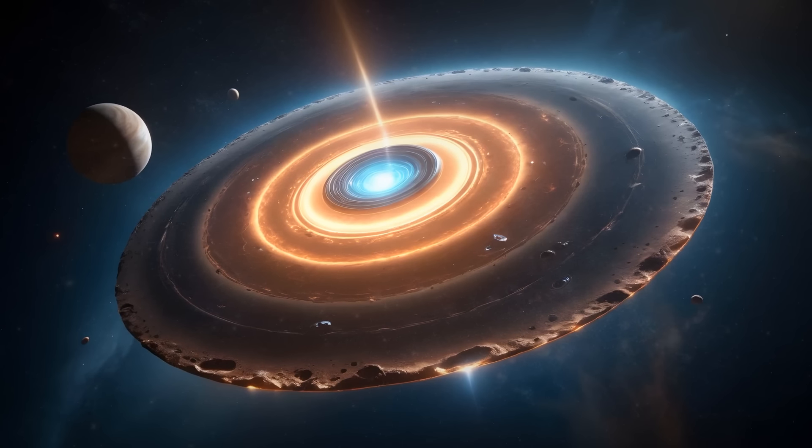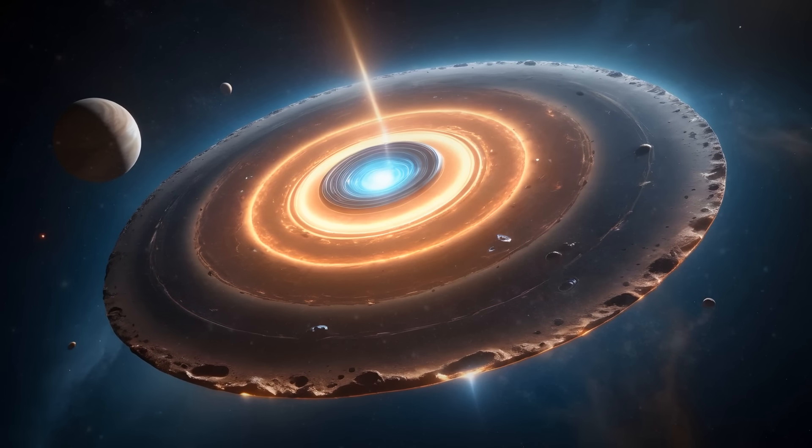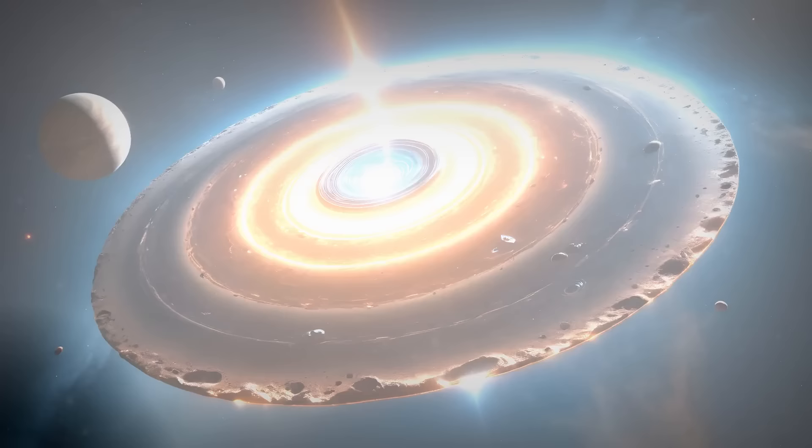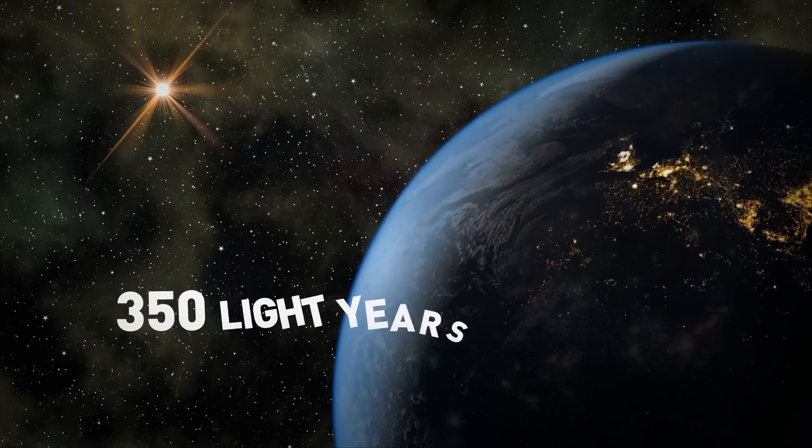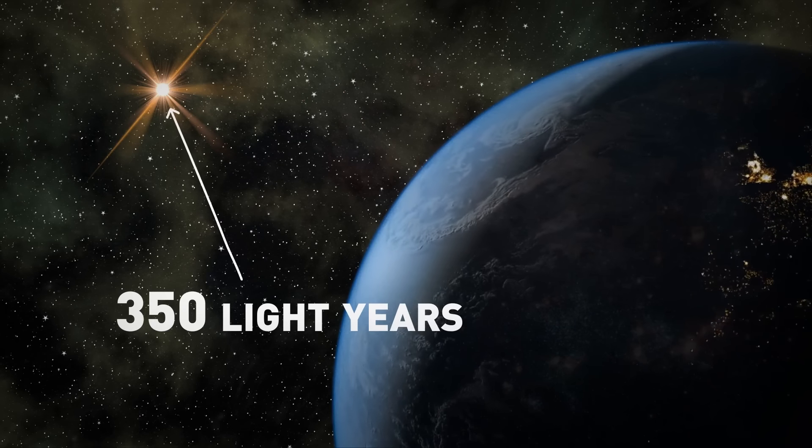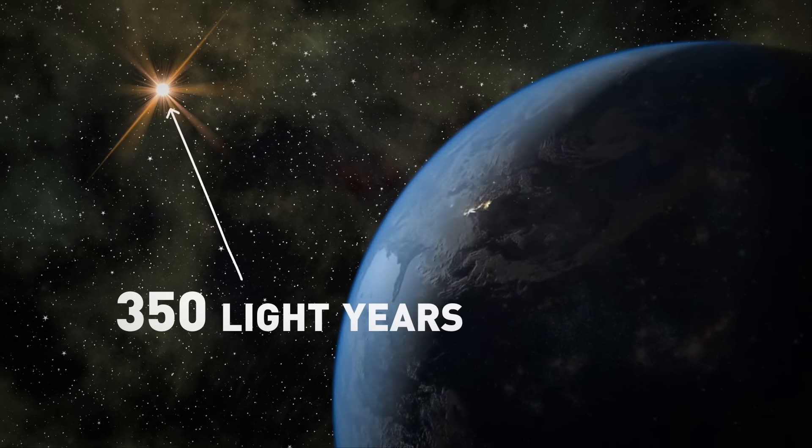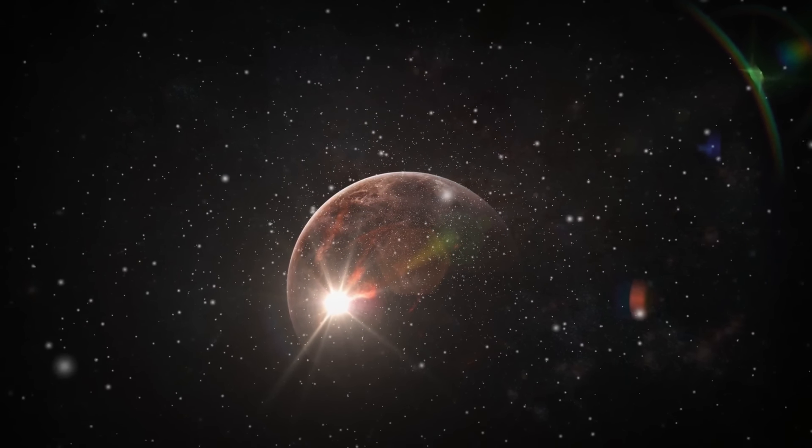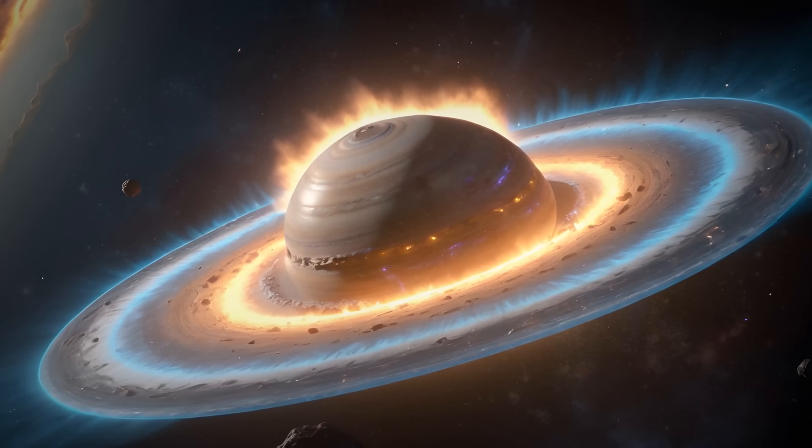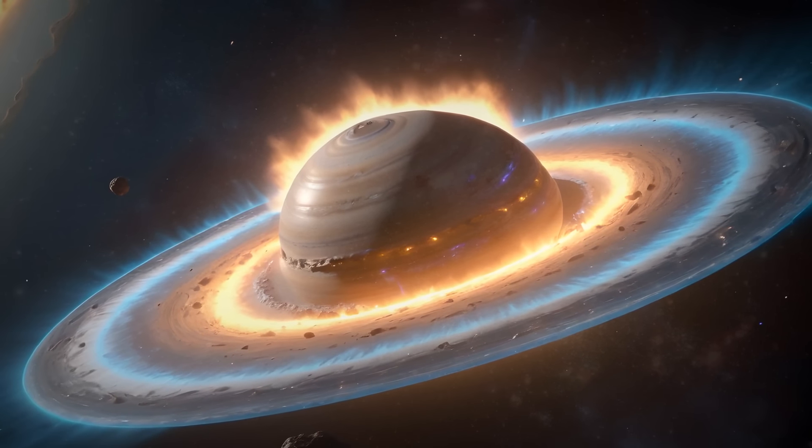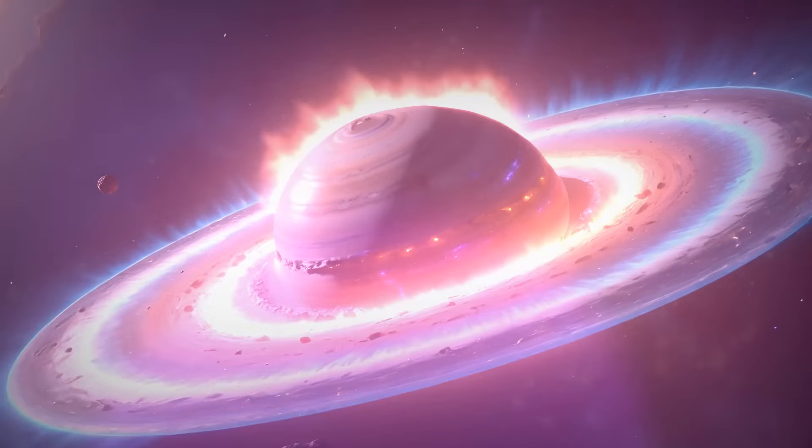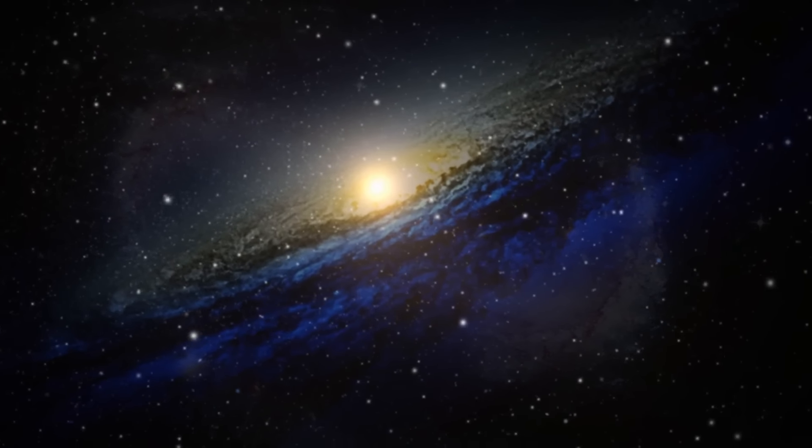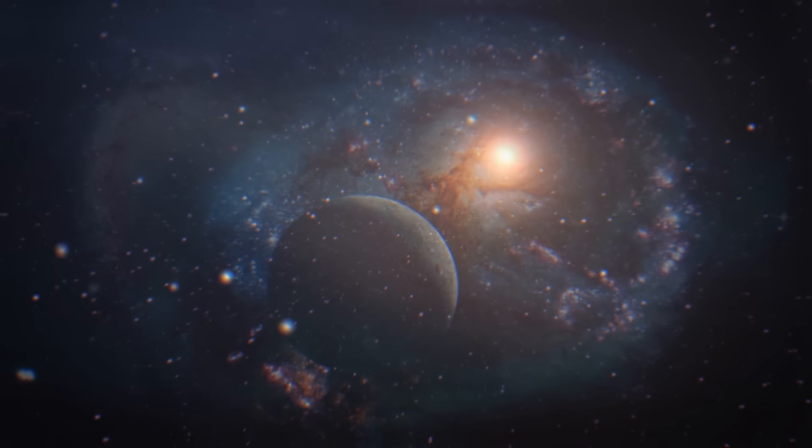That's why the team found another target: a disk around a young, low-mass star called T-Chi. This star, lying 350 light-years away from Earth, is quite interesting in its own right. It has a large dust gap in its disk, thought to be created by a planet or planets consuming all the material on its way around the star.